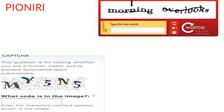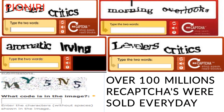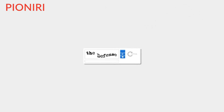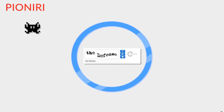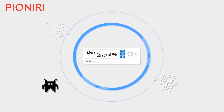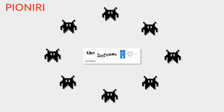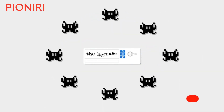Over 100 million CAPTCHAs are solved every day. CAPTCHA uses hard artificial intelligence problems for security. Humans can read and solve these distorted text CAPTCHAs, while computers and robots cannot.